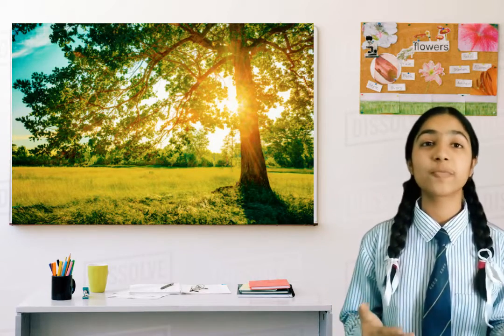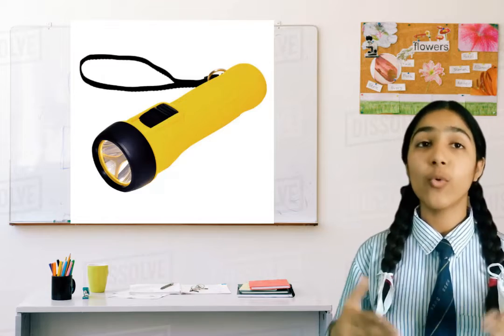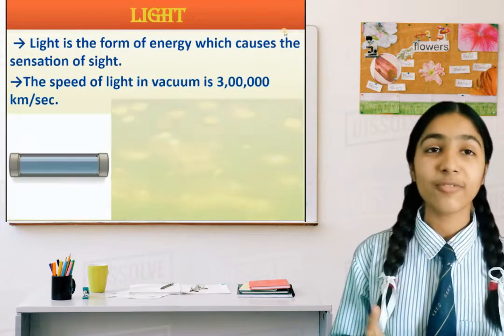We can see around us because of the presence of light. When we enter a dark place, we cannot see at that time. So we need torch, bulb, etc. Now what is light? Let's learn about what is light.